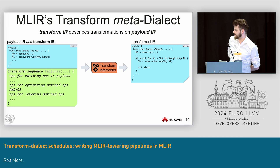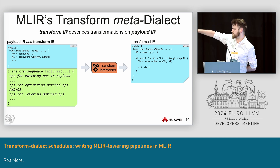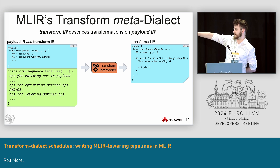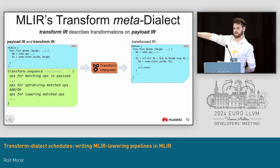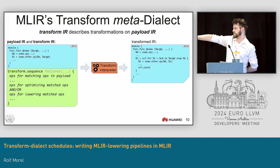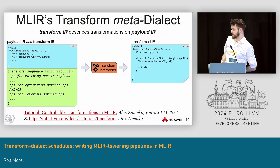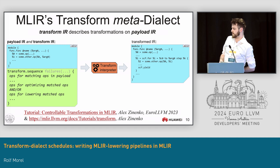In general, you will come across the transform dialect in this shape: one MLIR file where the transform IR is in the same file as the payload IR. The sequence of transform IR has some matching at the top — you select the kind of ops in your payload IR that you want to transform in a specific way — then you apply some optimization or lowering to those matched ops. The transform interpreter takes this one file and gives you the transformed IR. This is really mostly Alex's work, and I highly recommend watching his tutorial from last year to get familiar with it.